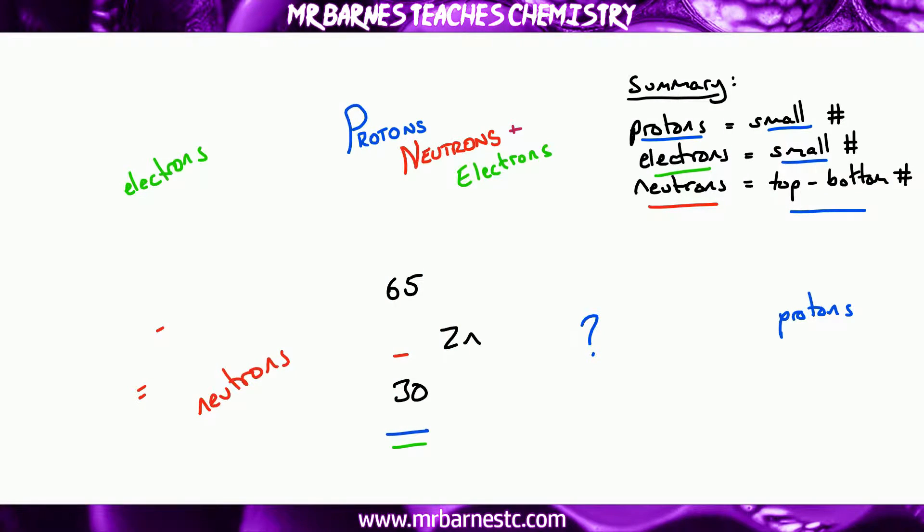And one final example, I've got zinc with a big number of 65 and a little number of 30. So, small number, 30 protons, small number, 30 electrons, and 65 minus 30 is 35 neutrons. And that really is everything you need to know for this part of the video.